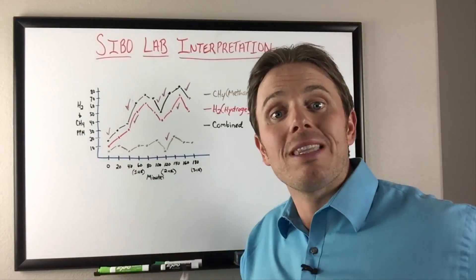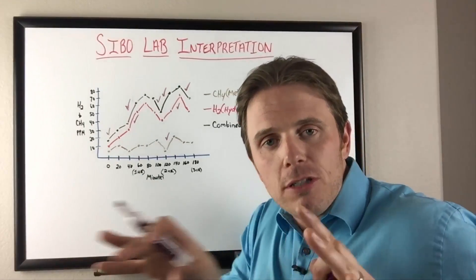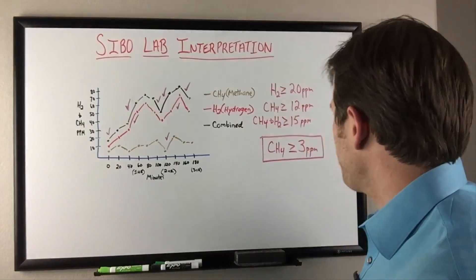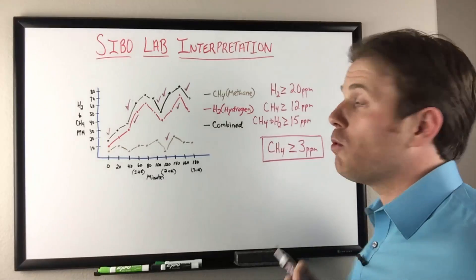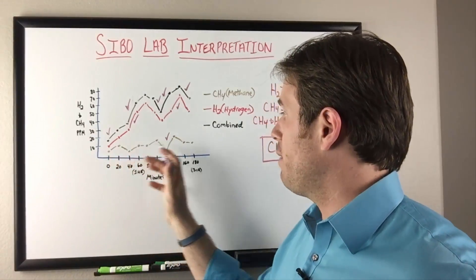Now, some people are maybe much less subtle than that. Also some people, there's a more subclinical marker that Dr. Sandberg-Lewis and Dr. Seebecker use, which is a methane greater than or equal to three.